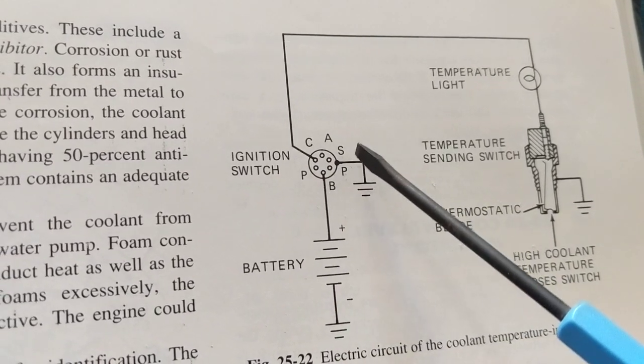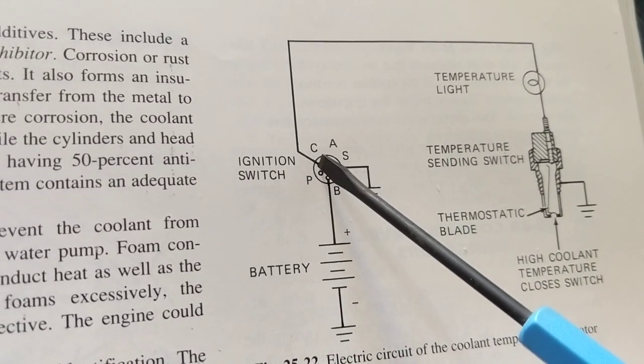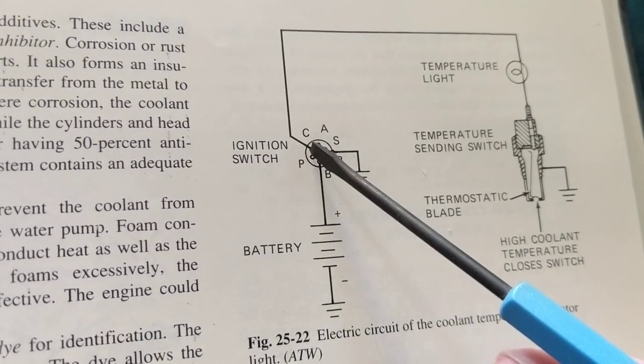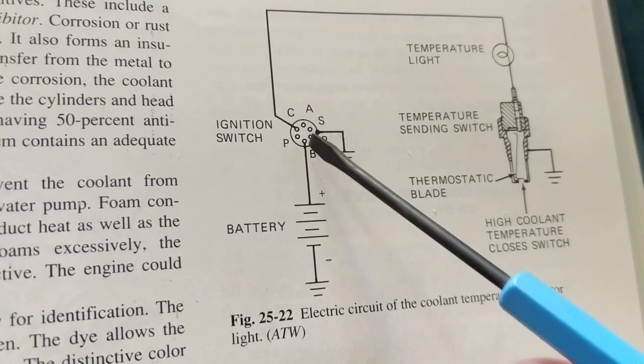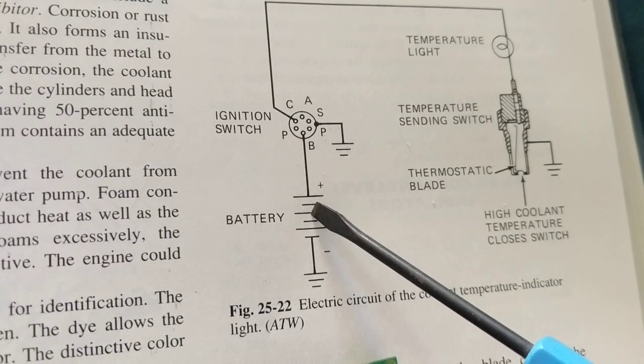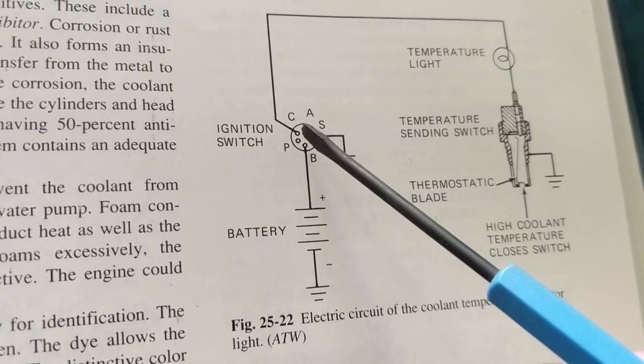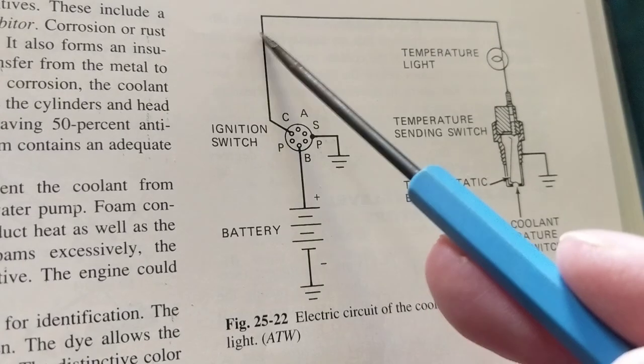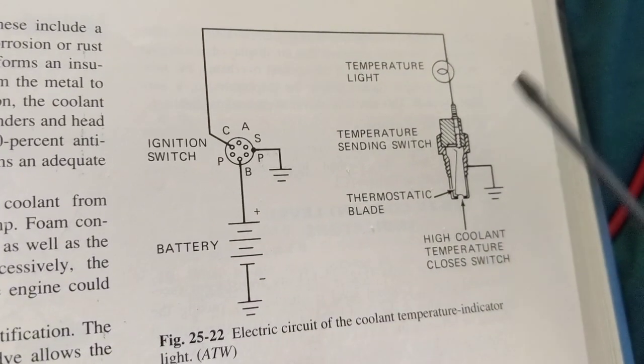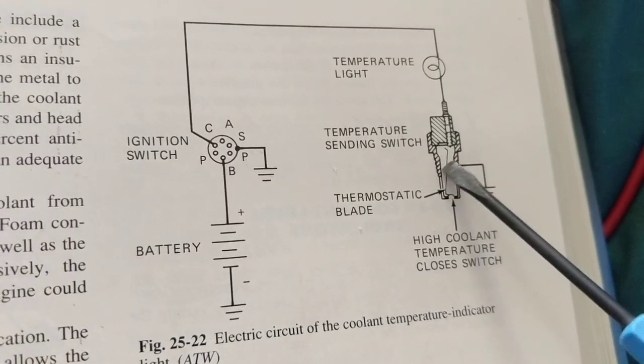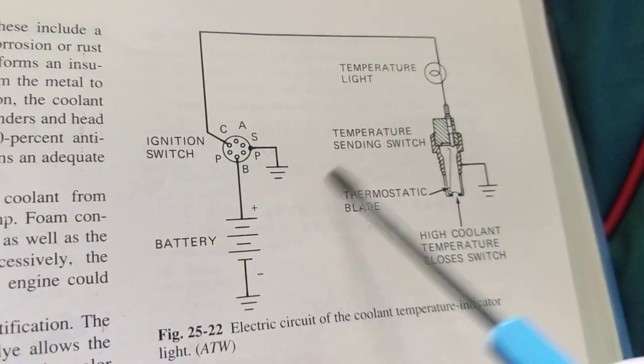From here we have a connection to where one side of B goes to the battery, which is the positive. The other side of C goes to where? From the ignition switch goes to a bulb which goes to a temperature sending switch.